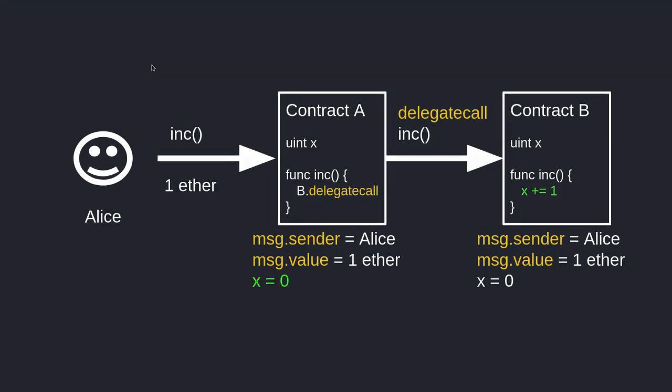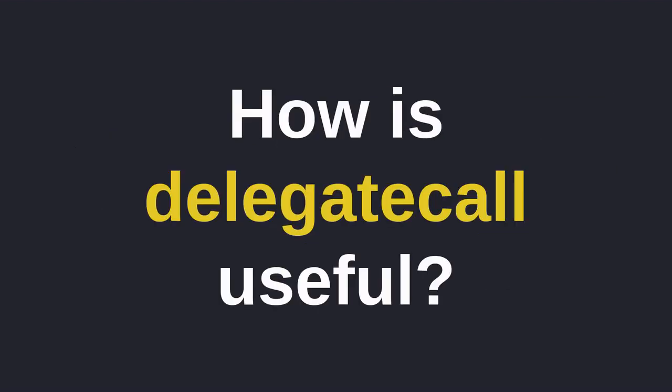When the code inside Contract B is executed, it does not change the state variable inside Contract B. Instead, the state variable x inside Contract A is updated. So what's happening here is that delegatecall runs the code inside Contract B using the storage, msg.sender, and msg.value of Contract A.